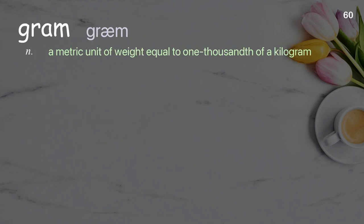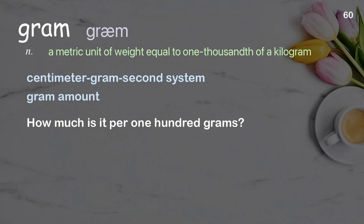Gram. A metric unit of weight equal to one thousandth of a kilogram. Examples: centimeter gram second system, gram amount. Sentence: How much is it per one hundred grams?